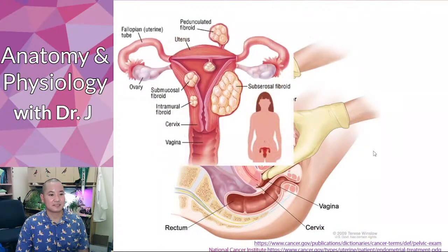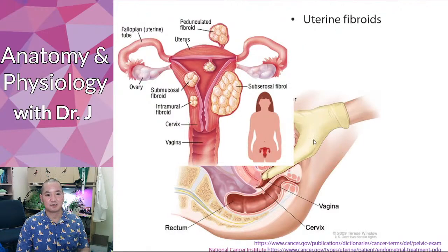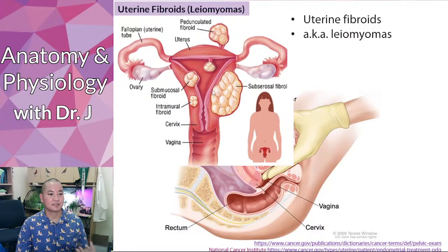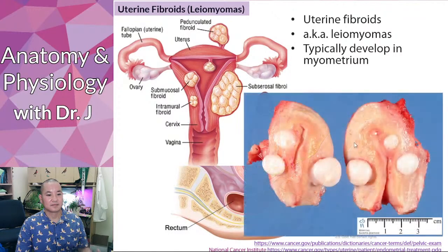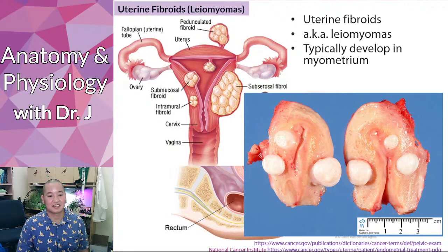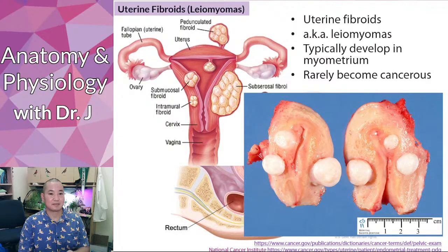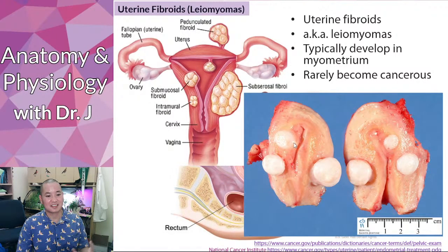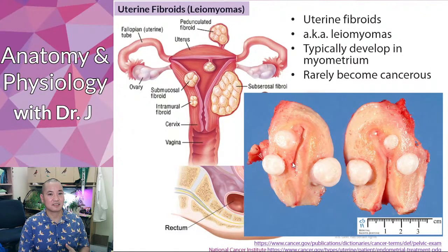A lump found during a pelvic exam doesn't necessarily mean cancer — it could be fibroids, also called leiomyomas. Uterine fibroids develop in the myometrium (the muscular layer). They can grow quite large but rarely become cancerous. They should still be checked out since they can cause pain and other symptoms.